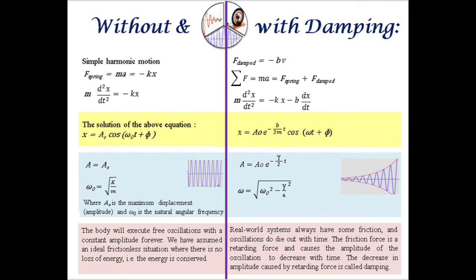The body will execute free oscillations with a constant amplitude forever in an ideal frictionless situation where there is no loss of energy. However, real-world systems always have some friction and oscillations do die out with time. The friction force is a retarding force and causes the amplitude of the oscillation to decrease with time. The decrease in amplitude caused by the retarding force is called damping.